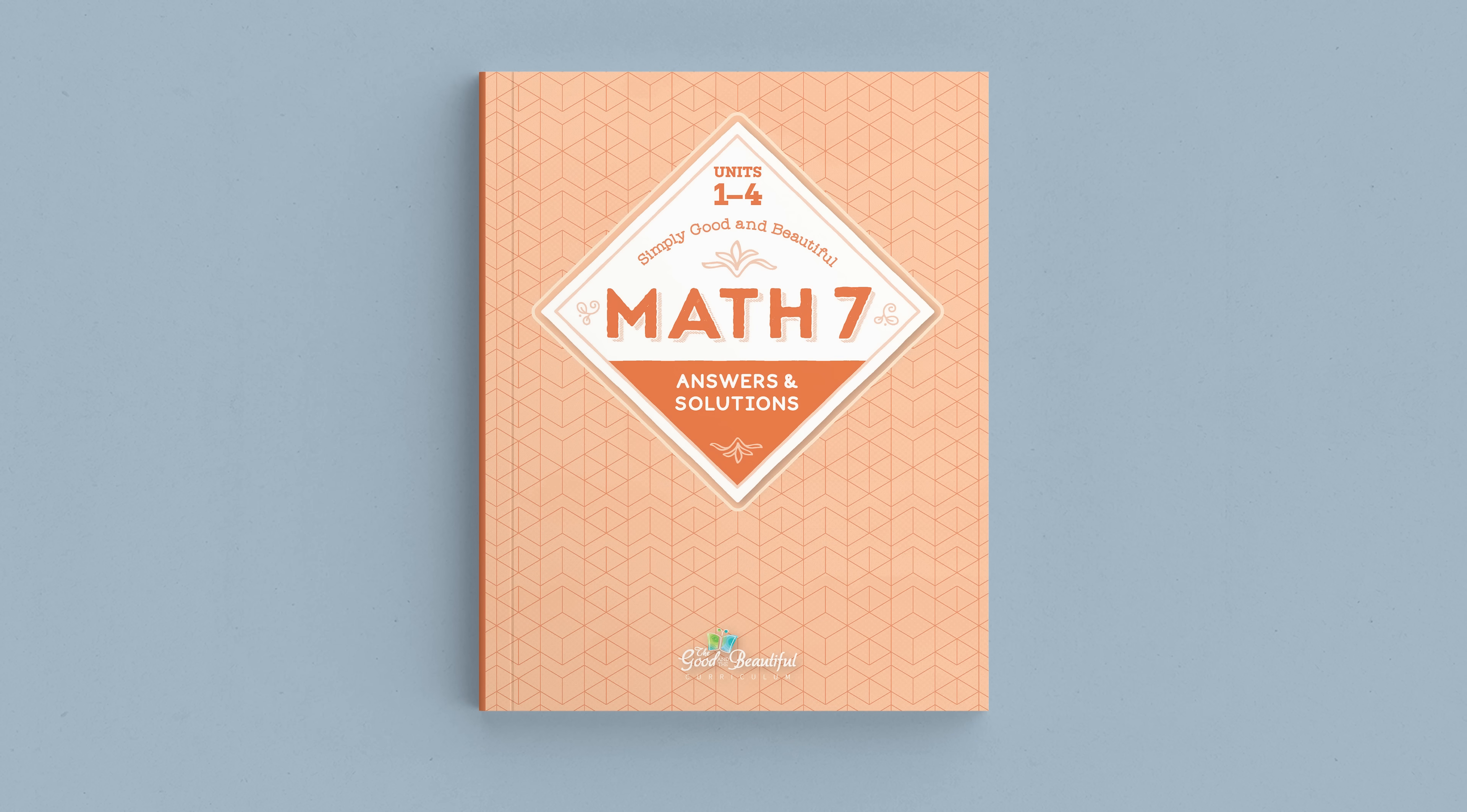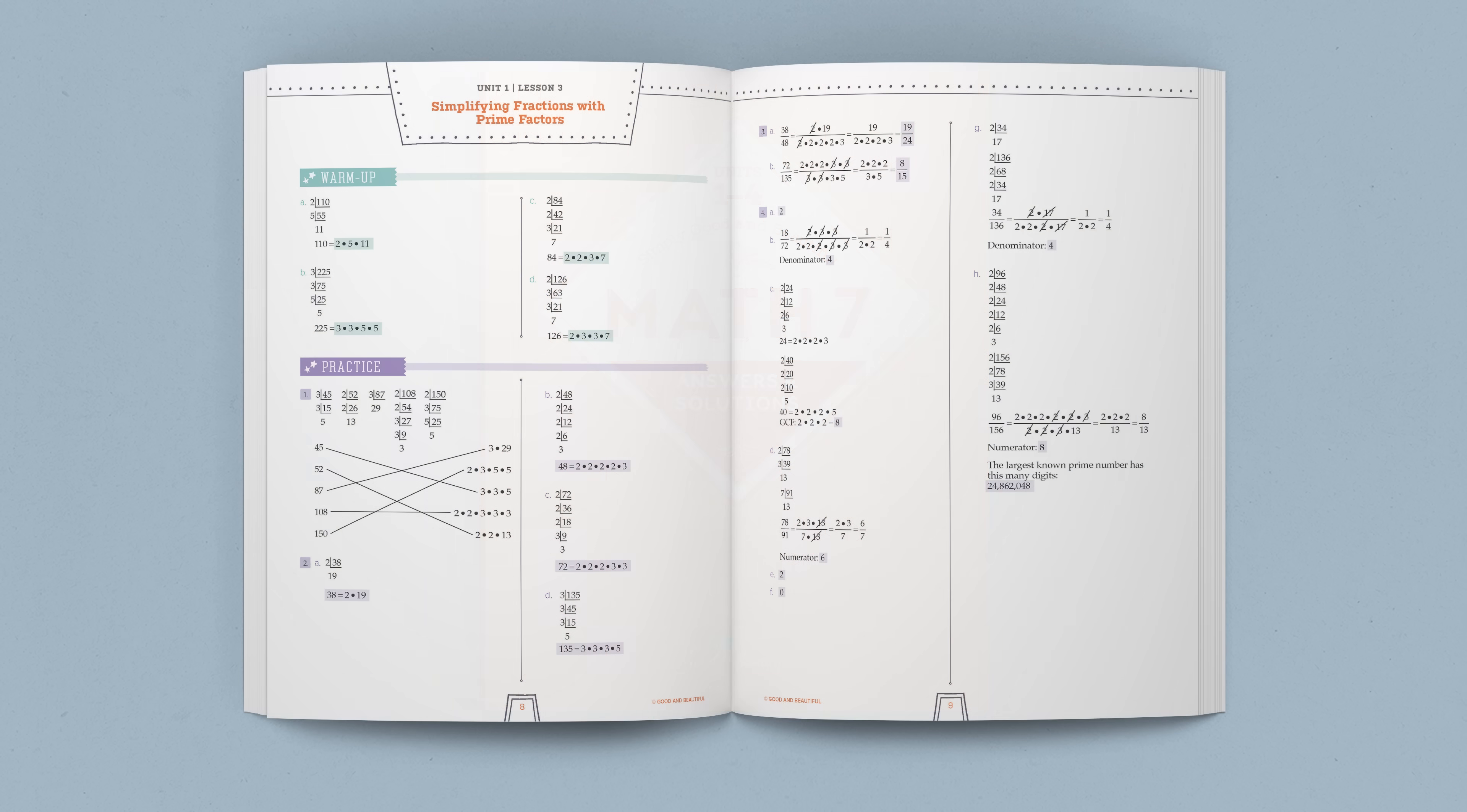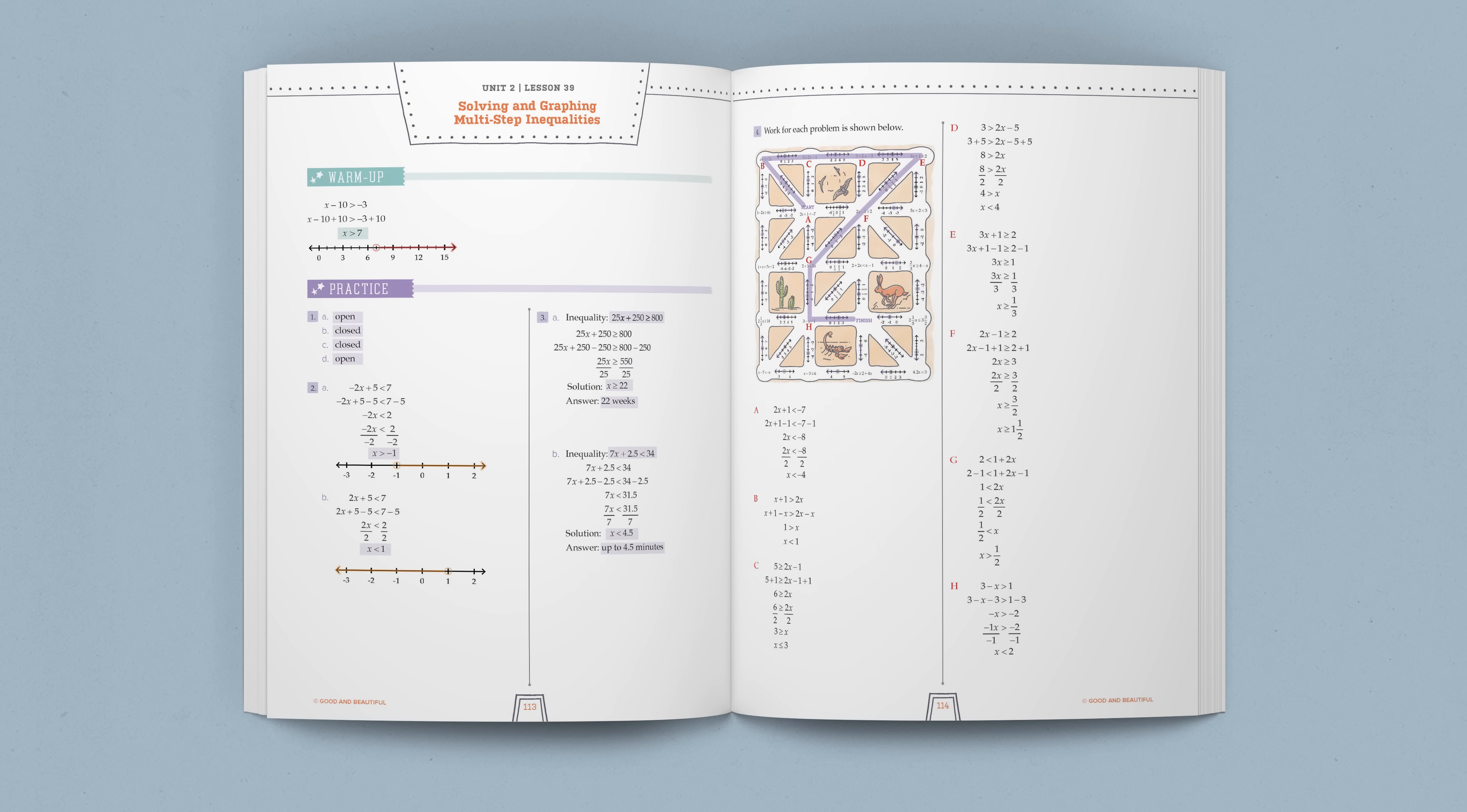Math 7 has an accompanying Solutions Manual, which provides detailed work and solutions for all problems in the course book. If students answer a problem incorrectly, they can use the Solutions Manual to identify where a mistake was made. They are then able to fix the problem and have greater confidence in their understanding.